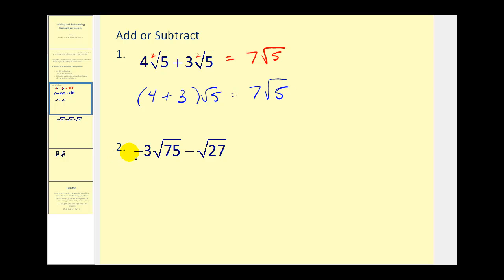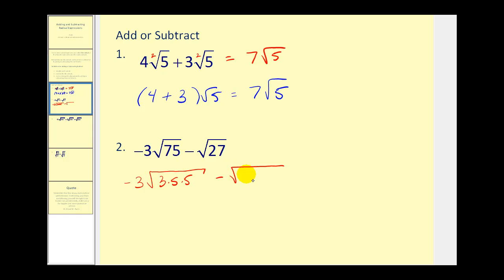Now number two: they're both square roots, which is good, but notice their radicands are different. However, we need to simplify these before we can determine whether we can add or subtract them. So if we simplify, seventy-five would be three times twenty-five, or three times five times five, minus the square root of twenty-seven. Well, twenty-seven is three times three times three. Remember our index is two, so we're looking for perfect square factors.